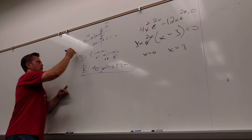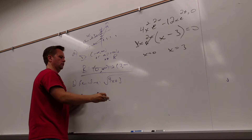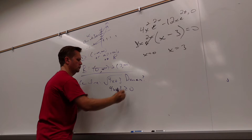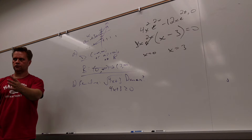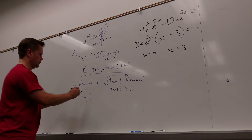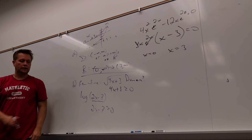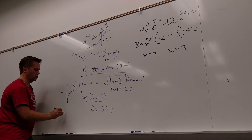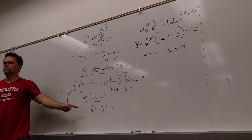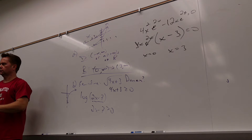It's all about knowing the shape and then figuring out the shifts. For the second part: how do you find the domain? For a square root, you set 4x plus 3 greater than or equal to 0 and solve — the inside can't be negative. What's got to be true about the inside of a log? The inside must be greater than 0, not even equal to 0, because logs can't handle 0. So you set 2x plus 7 greater than 0 and solve. Same idea but strictly greater than 0.